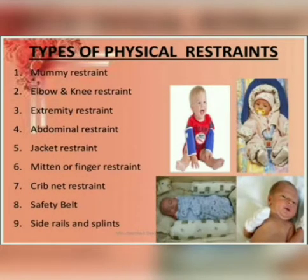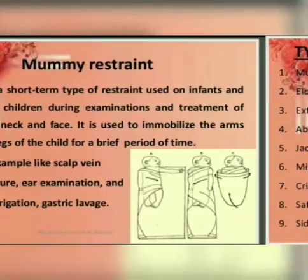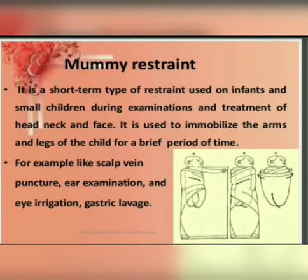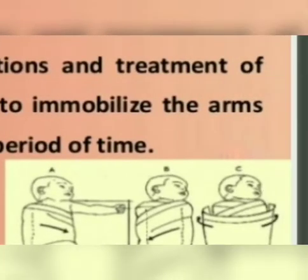The types of physical restraints include: mummy restraints, elbow and knee restraints, extremity restraints, abdominal restraints, jacket restraints, mitten, crib net, safety belt, side rails, and splints. Mummy restraint involves securing a sheet or blanket around the child's body in such a way that his arms are held to his sides and his leg and space movements are restricted.